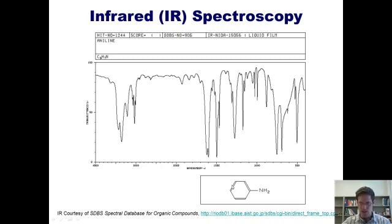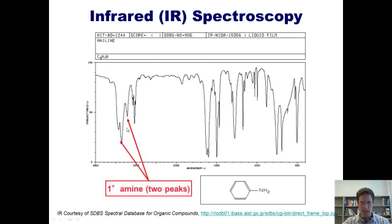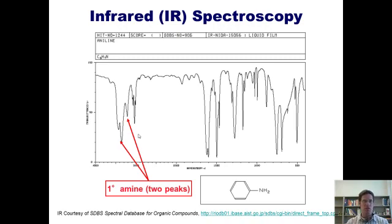Here's an IR of an amine-containing compound — aniline. Because it's a primary amine, it has two H's bonded to the nitrogen, so it gives two peaks down here in this region. It should make sense that an NH stretch appears around the same place as an OH, because an NH bond and an OH bond are chemically and physically similar.